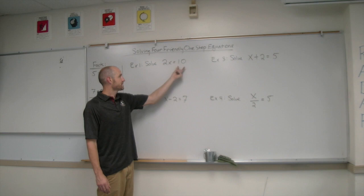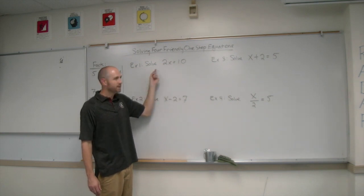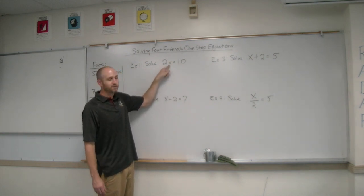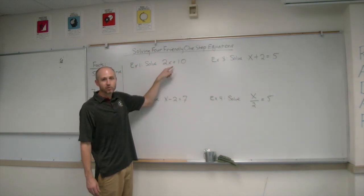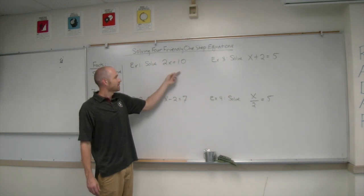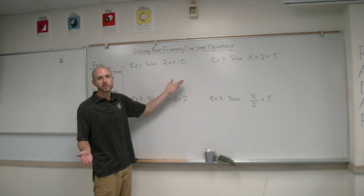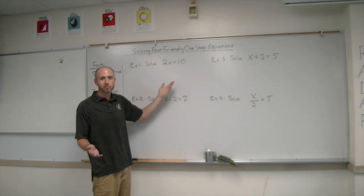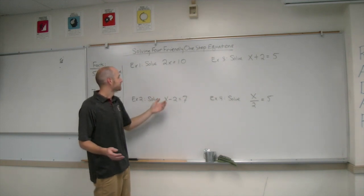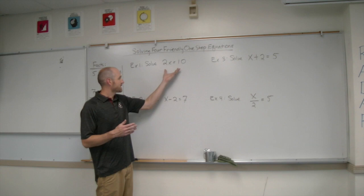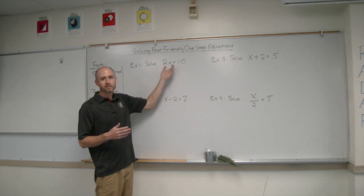Here's a true statement: 2x is equal to 10. If we're solving it, we're looking for what is the value of this variable that makes this statement true. What number, two times some number, is equal to 10? The number must be 5 — that's the value of the variable that makes the statement true.